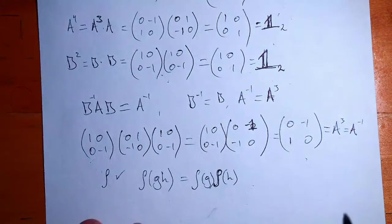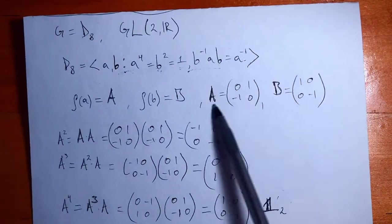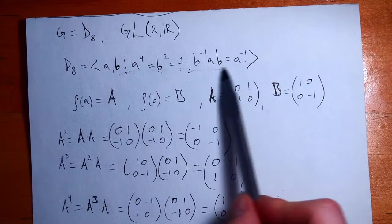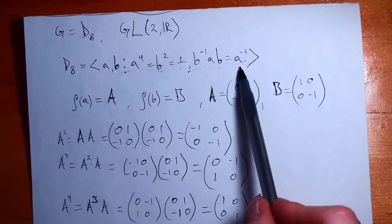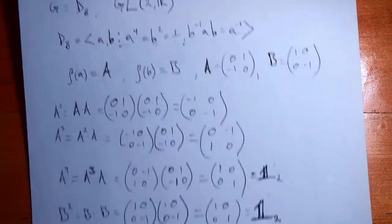And we find that A and B, capital A and B—these two matrices satisfy all of the equations in our presentation. So they do indeed generate D8.